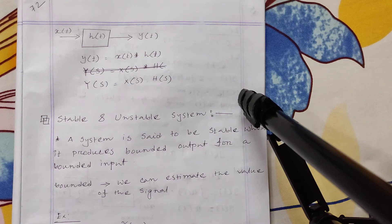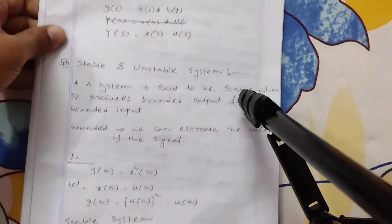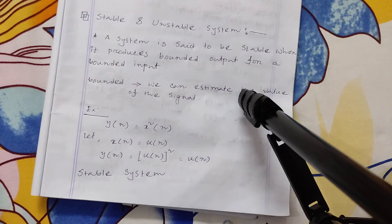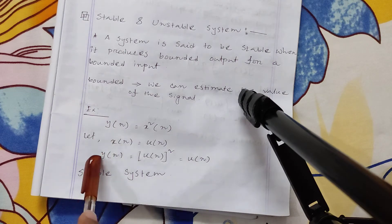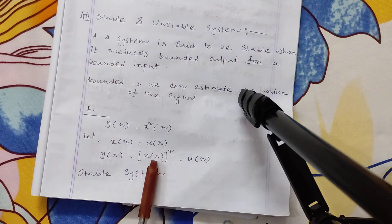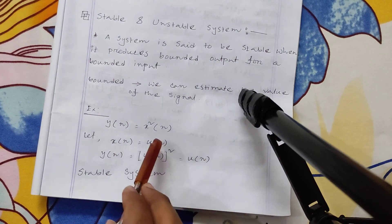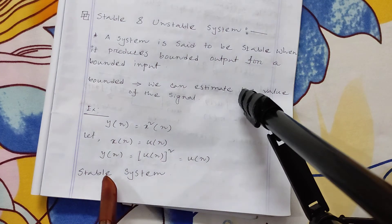The system y[n] = x²[n]. To check stability, we use the unit step signal as input. So if input is u[n] (unit step signal), then y[n] = u[n] squared. Since u[n] to any power equals u[n] — because for all n, 1 to any power is 1 — the output is always 1. So bounded input gives bounded output; we can call this a stable system.